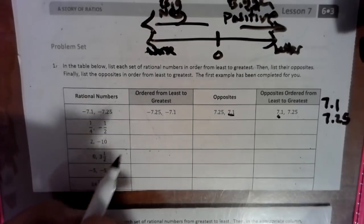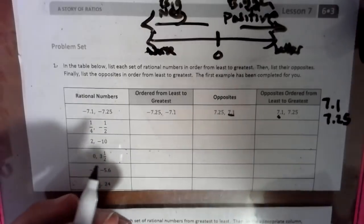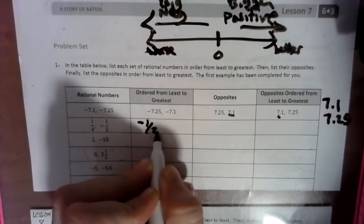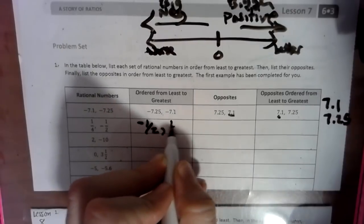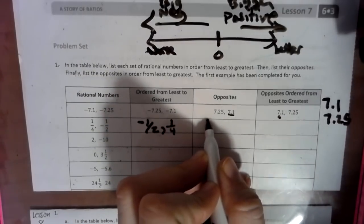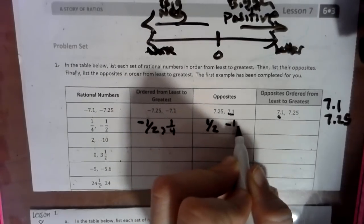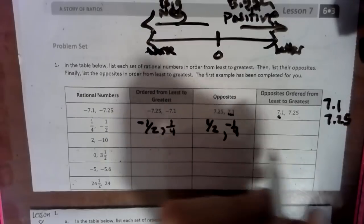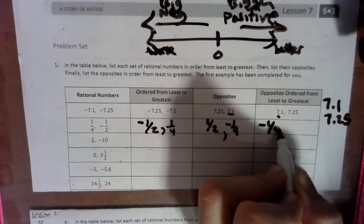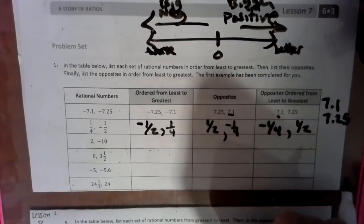Let's look at this next one. We have a negative one fourth and a negative one half. Right away, the negative number is worse off than a positive. If we have the opposites — the opposite of negative one half is one half, and the opposite of negative one fourth is negative one fourth. Ordering them from least to greatest, the negative one fourth is least and the better one is the one half.